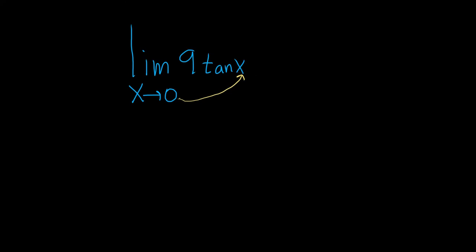In this case, we can plug it in and we just get tangent of 0. So this is equal to—now whenever you plug the number in, you stop writing the limit sign. So it's 9 times the tangent of 0.